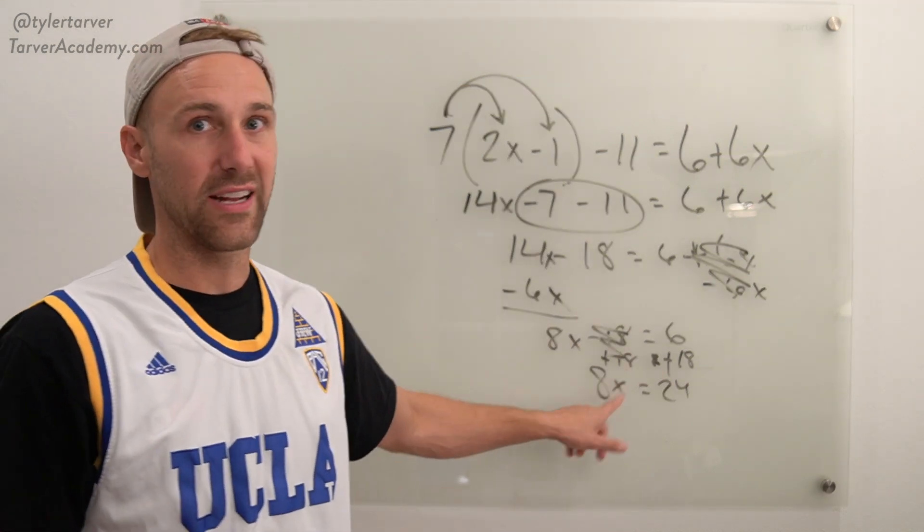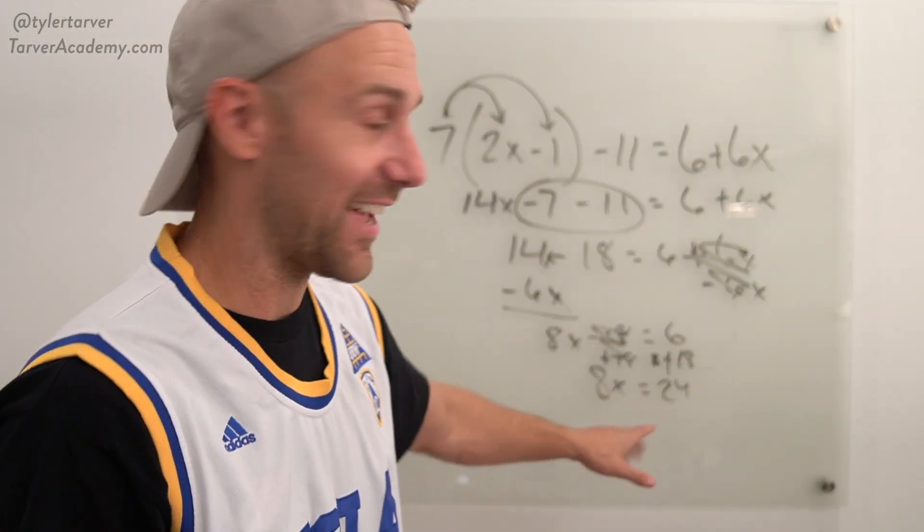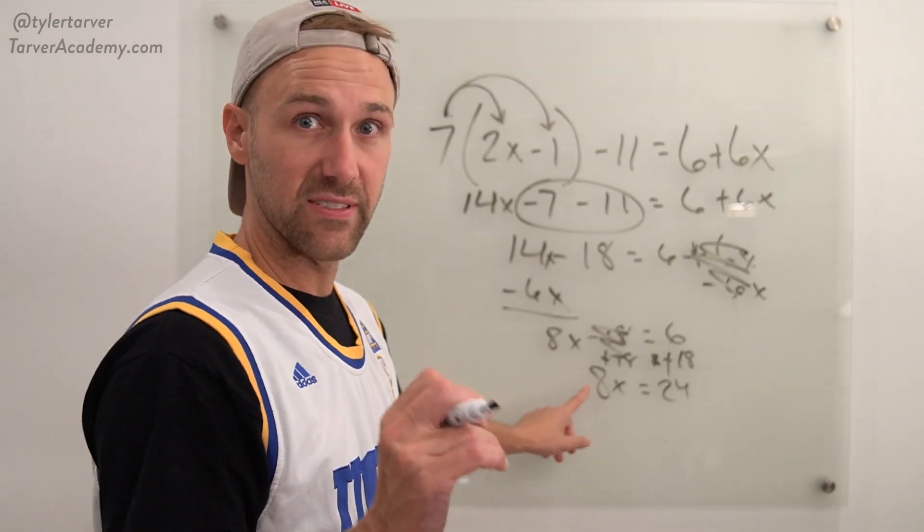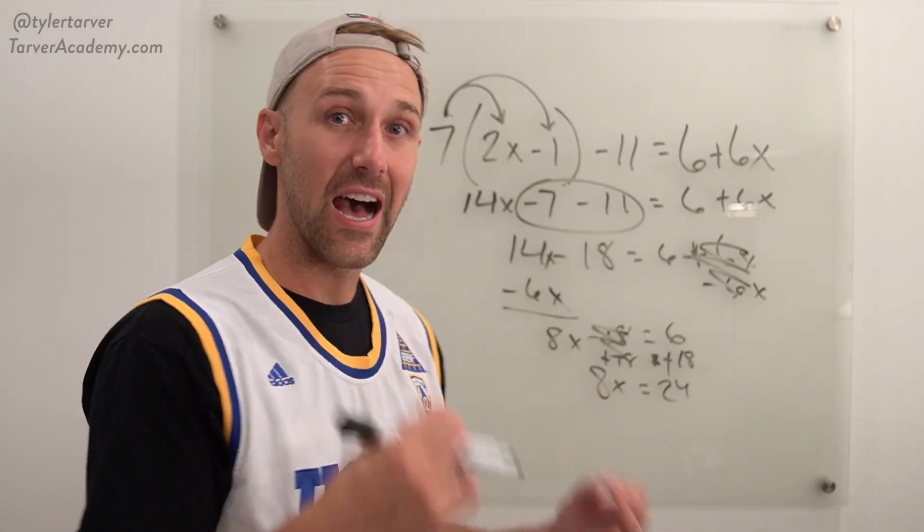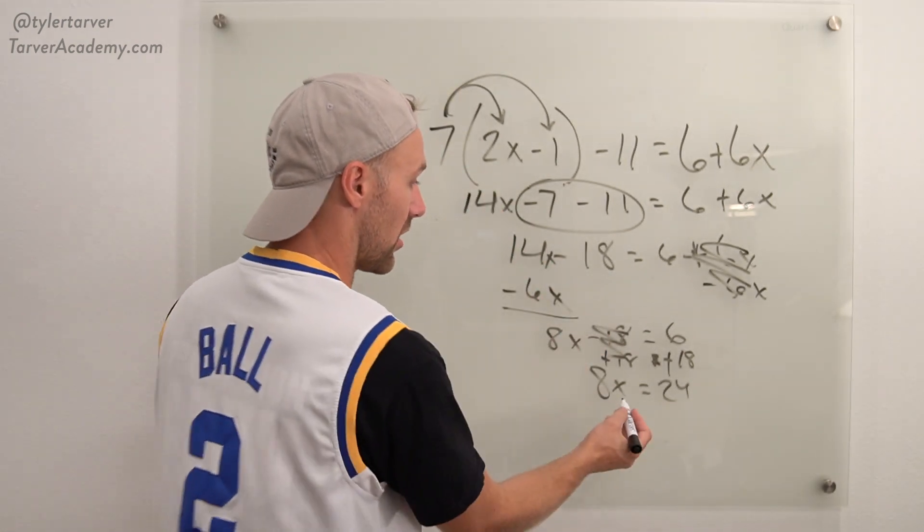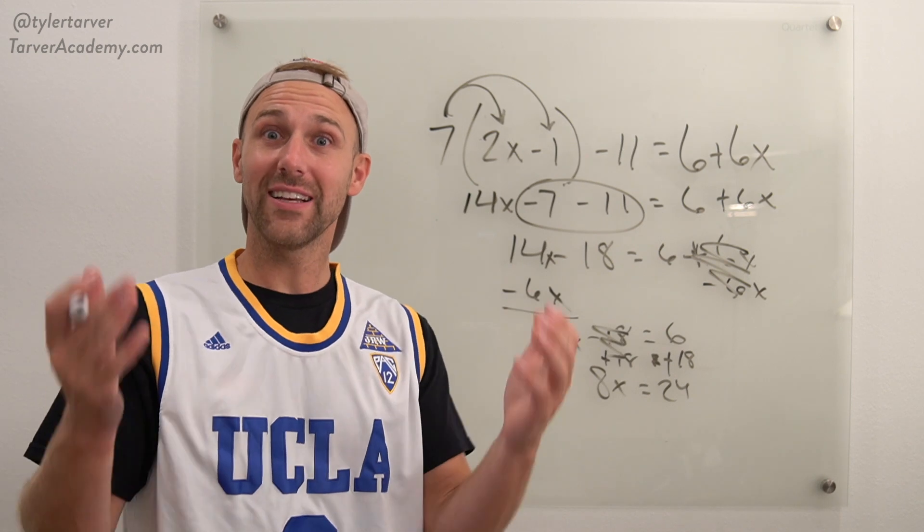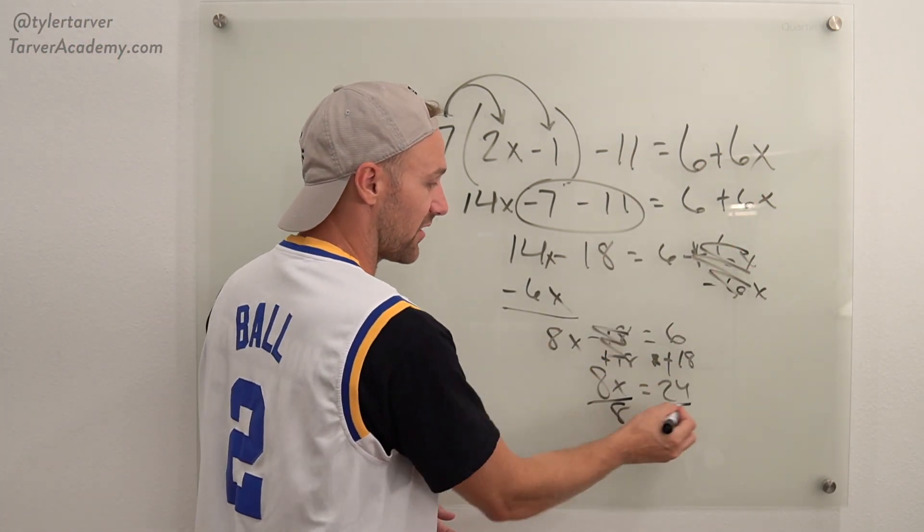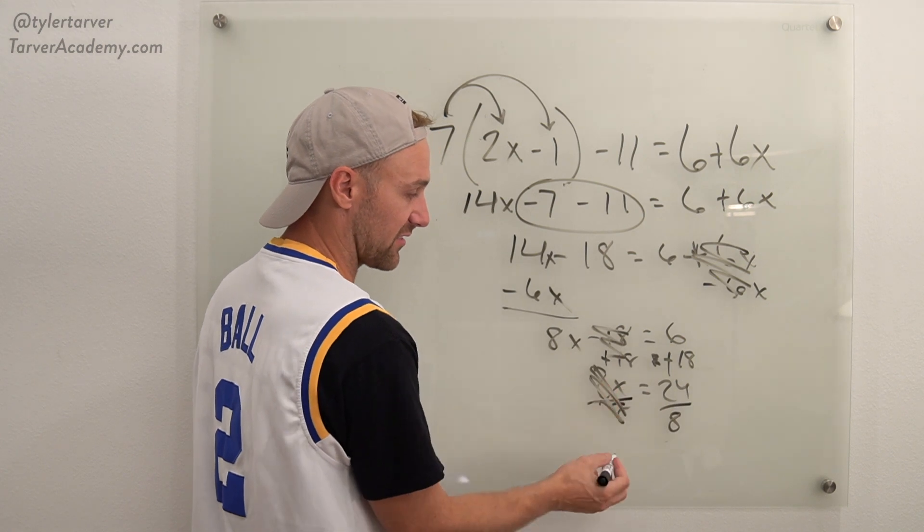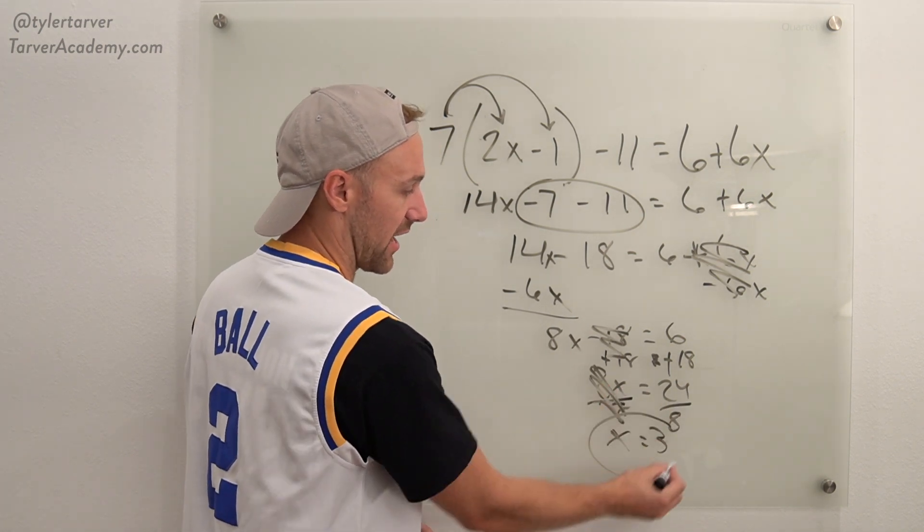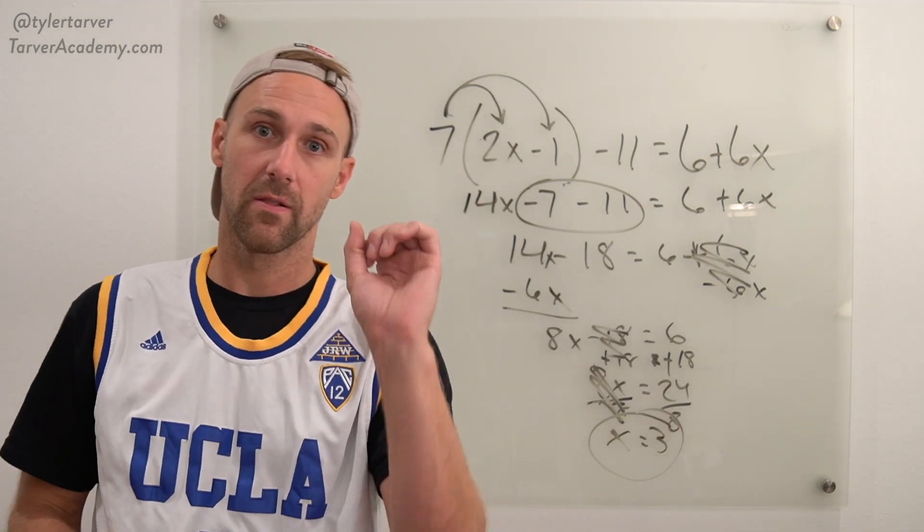Last step. Do not subtract 8 from that. That would be wrong. You've got to do the opposite of what's happening. It's 8 times x. So what's the opposite of multiplication? Division. That's right. Opposite of multiplication. We've got to divide 8 on both sides. That'll cancel it out here because it becomes 1. And then that is 3. x equals 3.